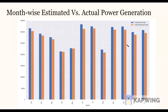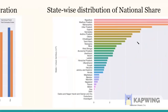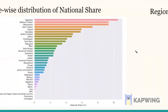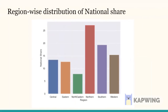The contribution of April and May are slightly low because the data for the lockdown was not available. This is the state-wise distribution of the national share in total electricity generation, where Rajasthan is in the lead. This graph shows the region-wise distribution of national share, where the northern part is at the lead.